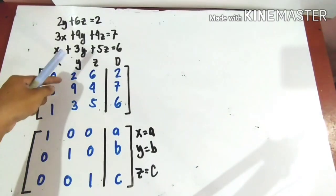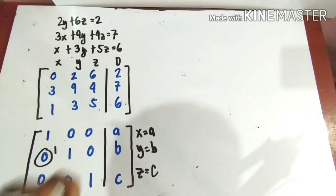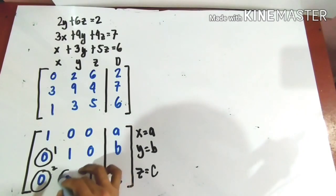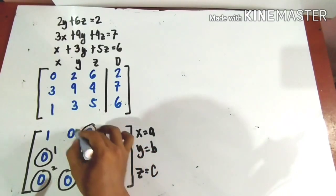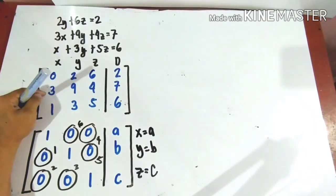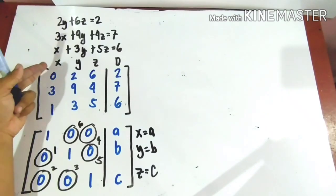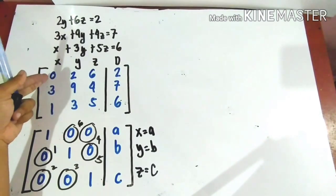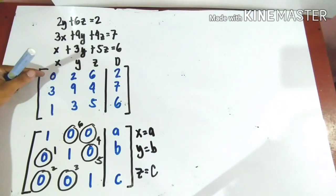The first step is to make this coefficient zero — the x of row 2. Since we already have a 0 in the x column in row 1 (the first equation), we can swap row 1 and row 2. So we'll interchange the coefficients of row 1 and row 2.